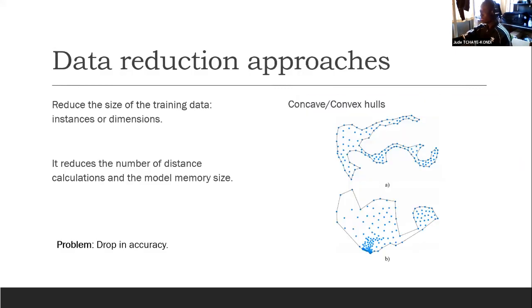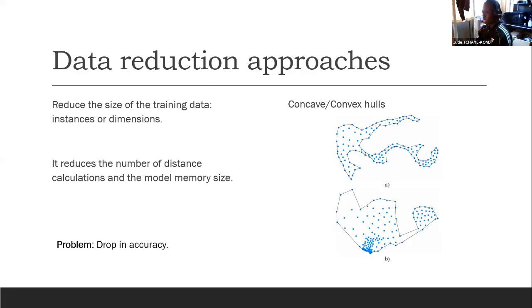Some solutions are proposed for reducing the complexity and the memory issue. One simple solution is data reduction approaches. The idea is to reduce the size of the training dataset — we can reduce the number of instances or the feature dimension. This reduces the number of distance calculations and the model memory size, since when we use a scanning algorithm we need to carry the entire dataset even during prediction.